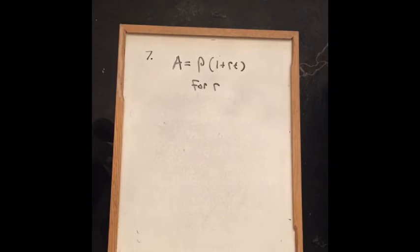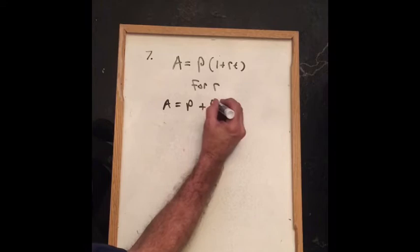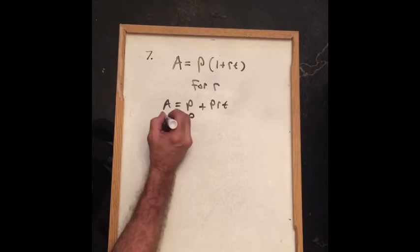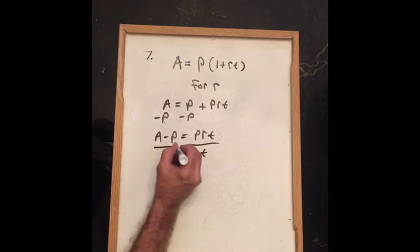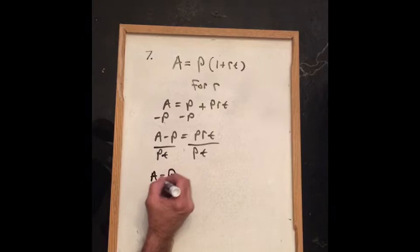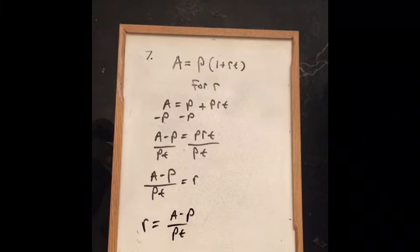For problem 7, we are given an equation and want to solve it for r, meaning get r all by itself. Start with the distributive property: a equals p times 1 plus p times r times t. Then subtract p from both sides to get a minus p equals p times r times t. Since we want r alone, divide by pt on both sides, and the result is r equals a minus p over pt.